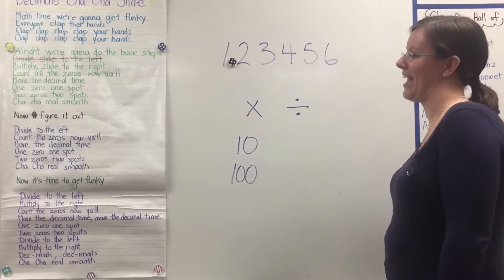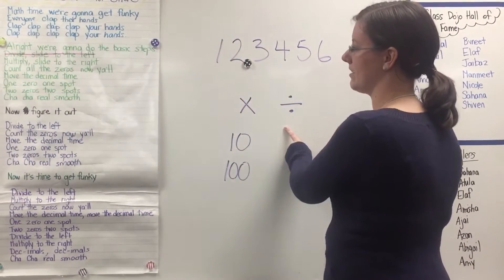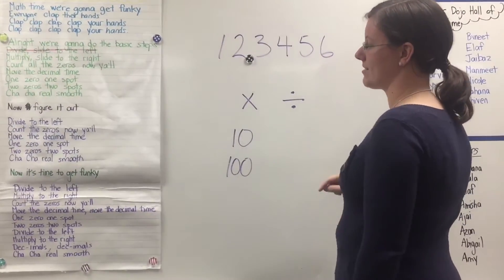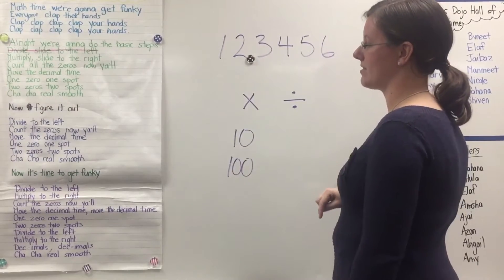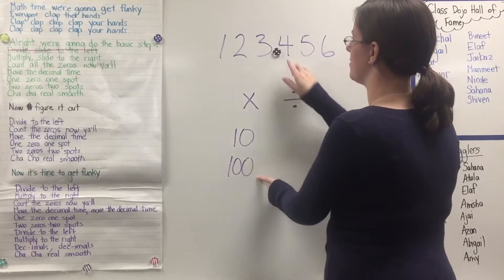Now it's time to get funky. Multiply to the right. Move the decimal time. One zero, one spot. Two zeros, two spots.